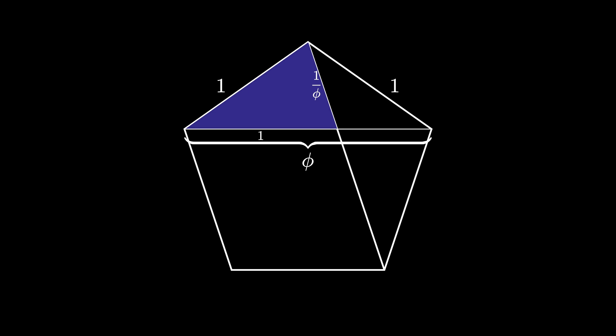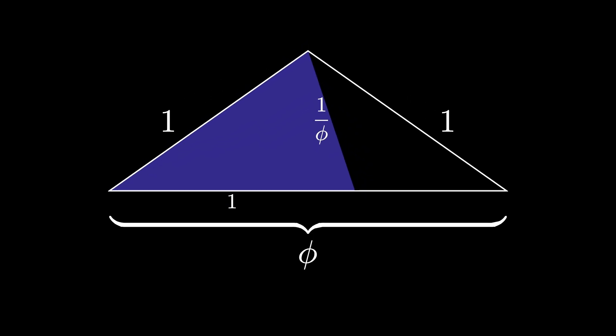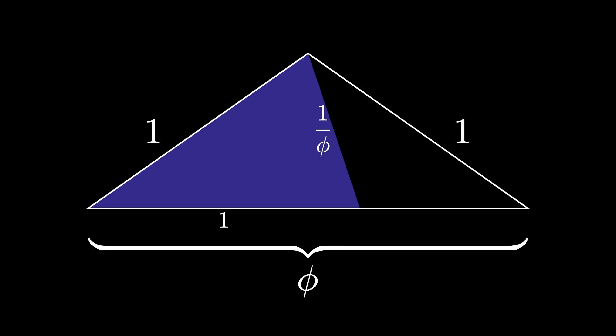To see a proof of this fact, check the video linked in the description. The purple shaded triangle shown in this diagram is known as the golden triangle. The outer containing triangle is often referred to as the golden gnomon.